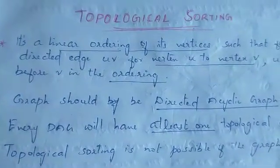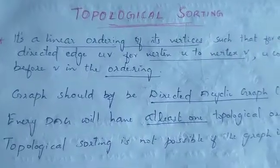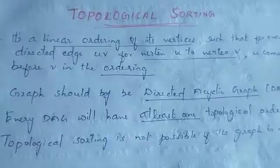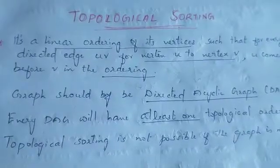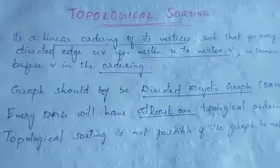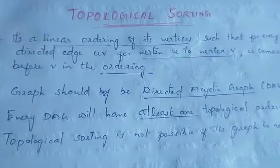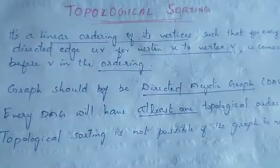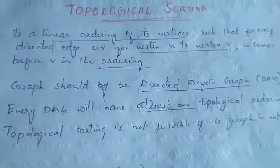If u is a vertex, then u will come before v. It is a linear ordering of vertices such that for every directed edge u, v — from vertex u to vertex v — u comes before v in the ordering.